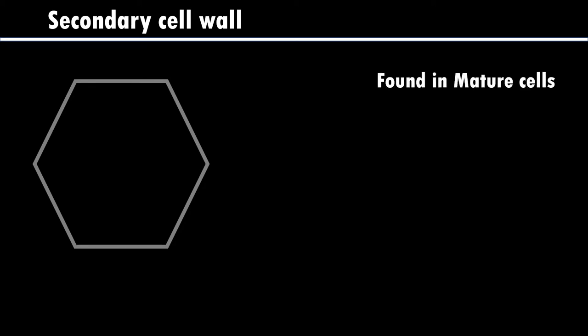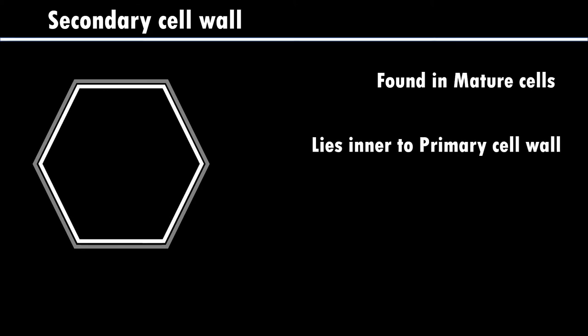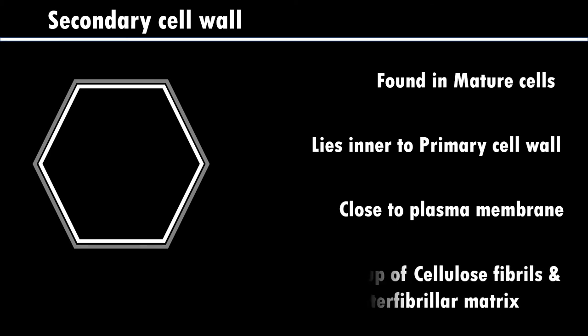The secondary cell wall, which is next to the primary cell wall, is found in mature cells. It lies inner to the primary cell wall and close to the plasma membrane. The plasma membrane is the outermost layer of the protoplasm, found in all types of cells. The secondary cell wall is made up of cellulose fibrils and interfibrillar matrix.